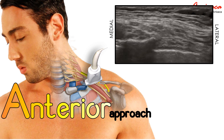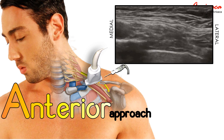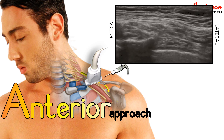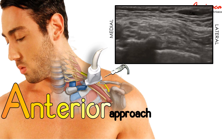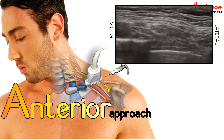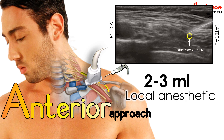To access the suprascapular nerve via an anterior approach, we will execute an in-plane puncture moving from lateral to medial. This will involve depositing two to three milliliters of substance around the nerve, positioned to the side of the brachial plexus and beneath the omohyoid muscle.